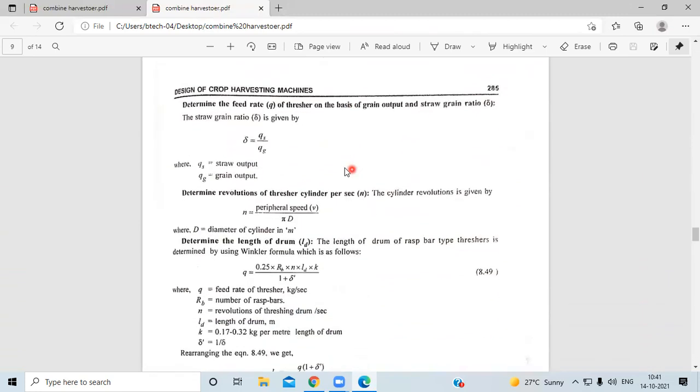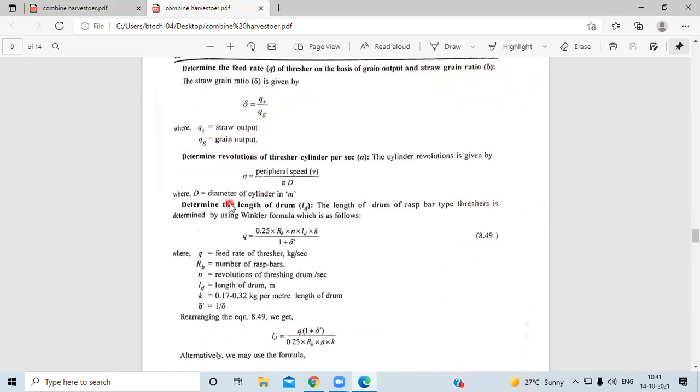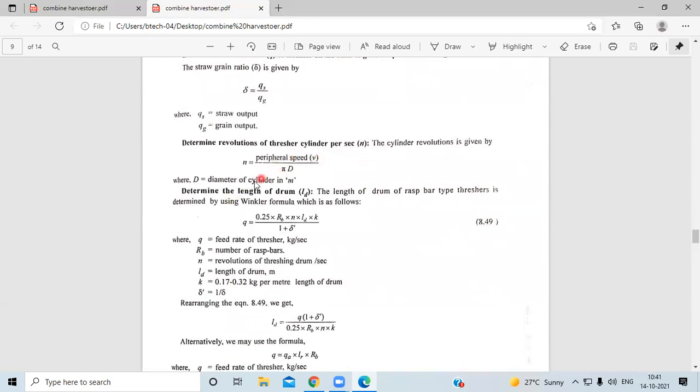Next, determine the feed rate of the thresher on the basis of grain output and straw-grain ratio. Delta equals qs upon kg, where qs is the straw output and kg is the grain output. Then determine the revolution of the threshing cylinder. N equals peripheral velocity given by pi D.